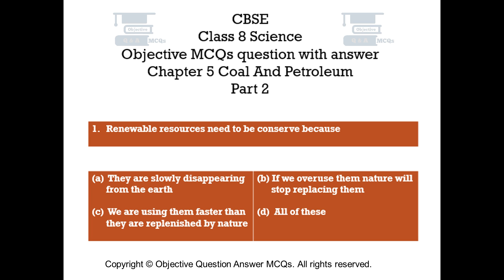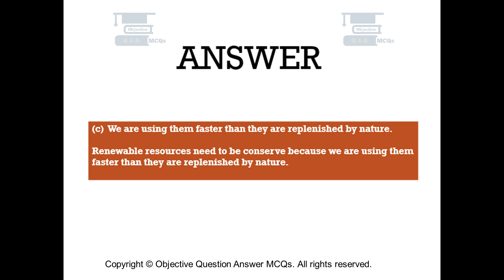Question number 1: Renewable resources need to be conserved because — Option A: They are slowly disappearing from the earth. Option B: If we overuse them, nature will stop replacing them. Option C: We are using them faster than they are replenished by nature. Option D: All of these. The right answer is Option C: We are using them faster than they are replenished by nature.